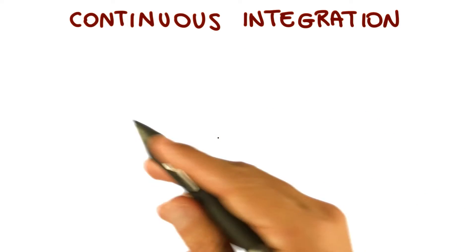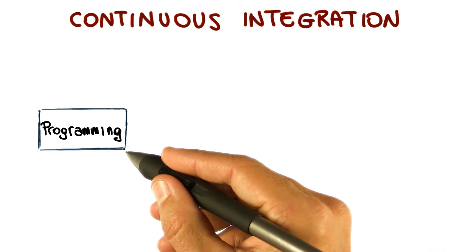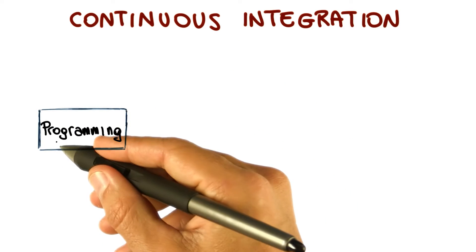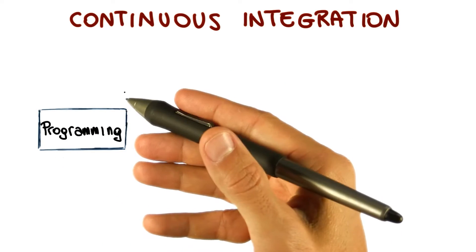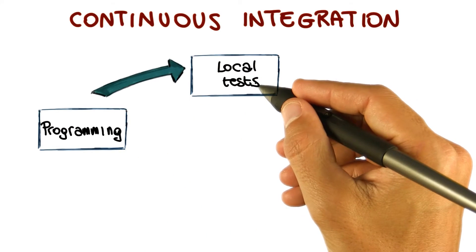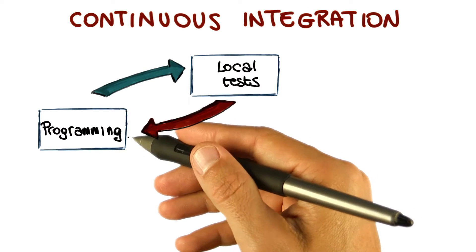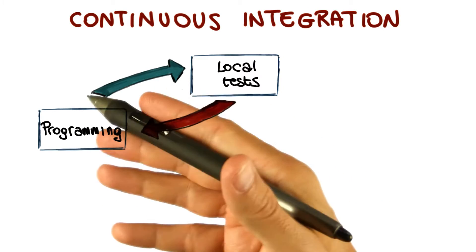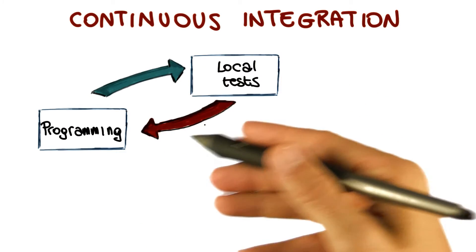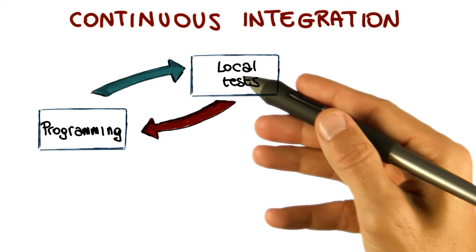What goes on here is a cycle, and the cycle starts with the developer's programming. As soon as the developers are done modifying the code and they have a stable version, they will run their local tests. If the local tests fail, the developers will go back to programming to fix their code and possibly add new code as needed. This mini cycle will continue until all the local tests pass.